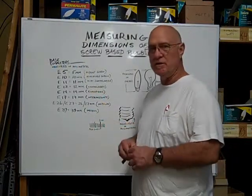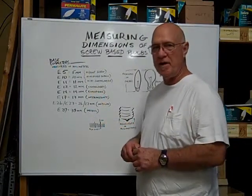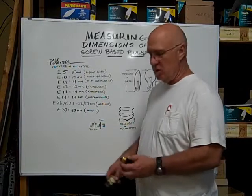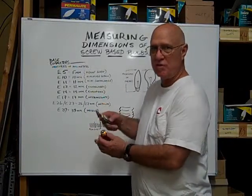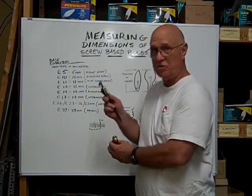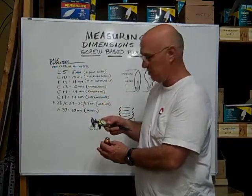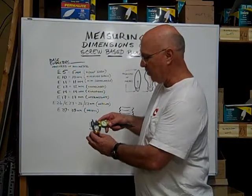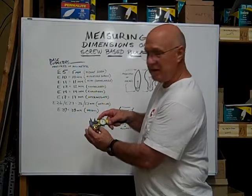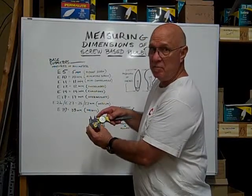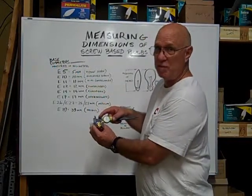Now to determine the size of your screw base bulb, measure across the diameter of the screw base, the outer diameter. I'm going to use a caliper. It's measured in millimeters. So if I place the caliper on here, it's exactly 26 millimeters on this medium screw base bulb.